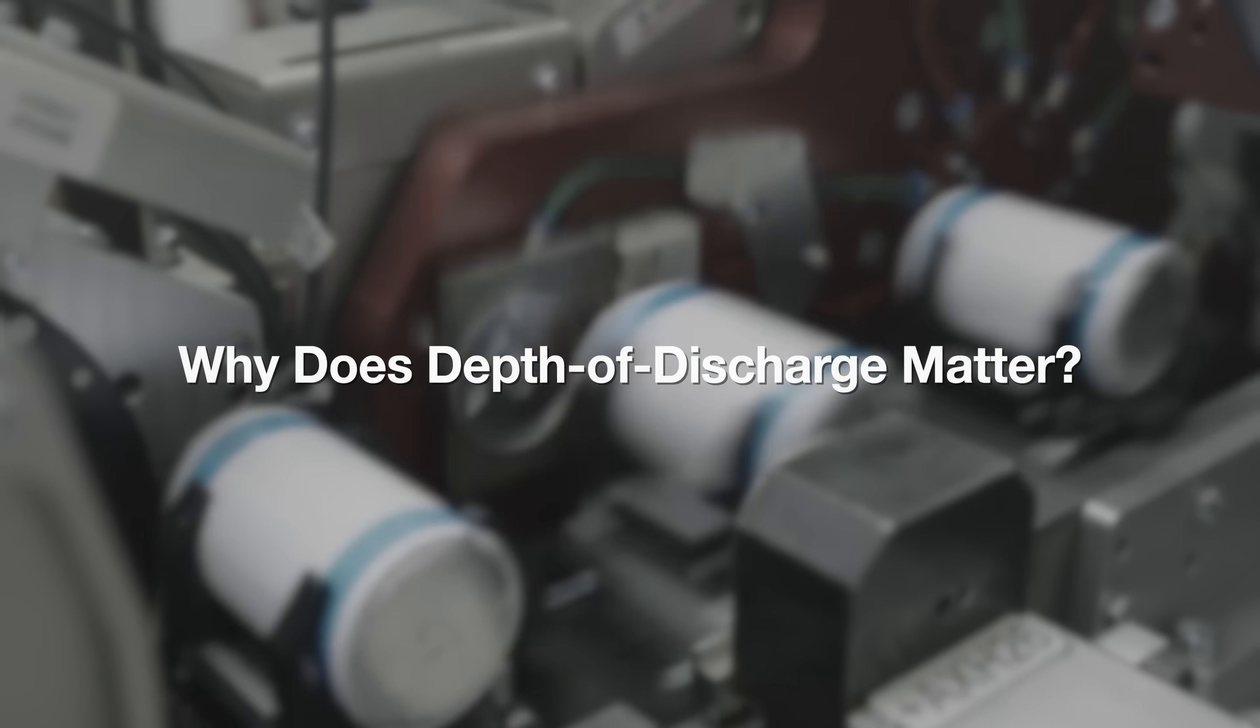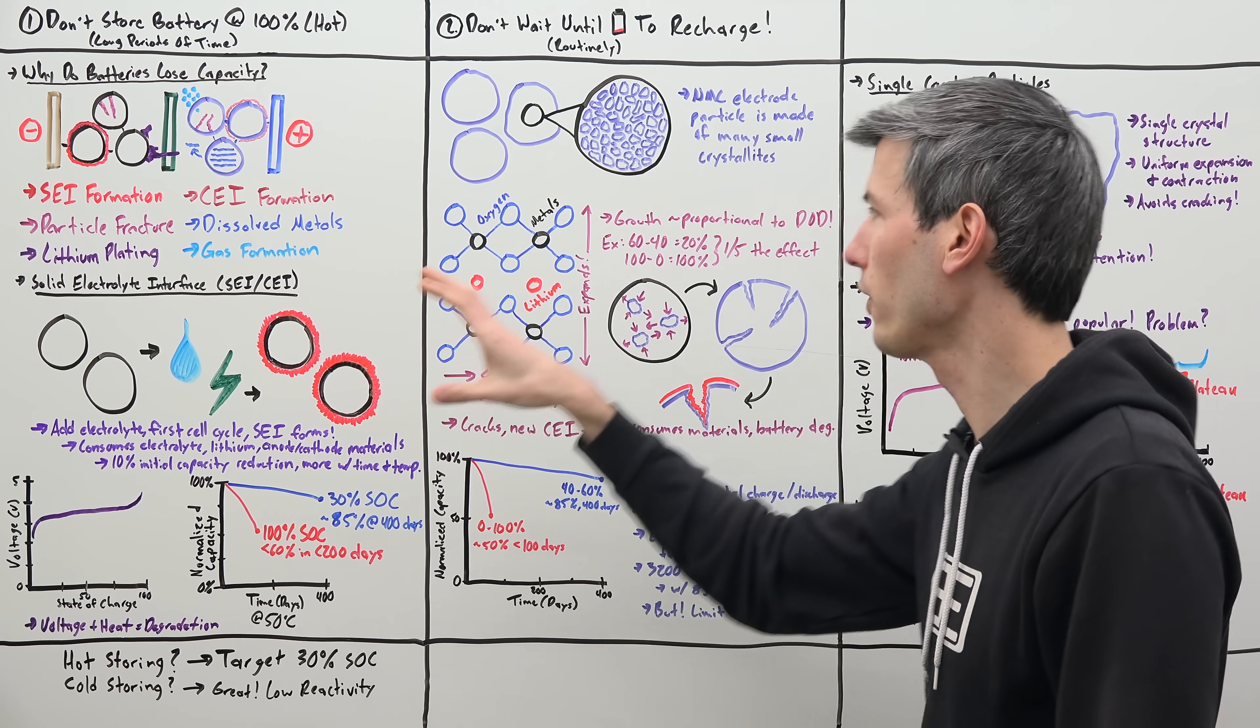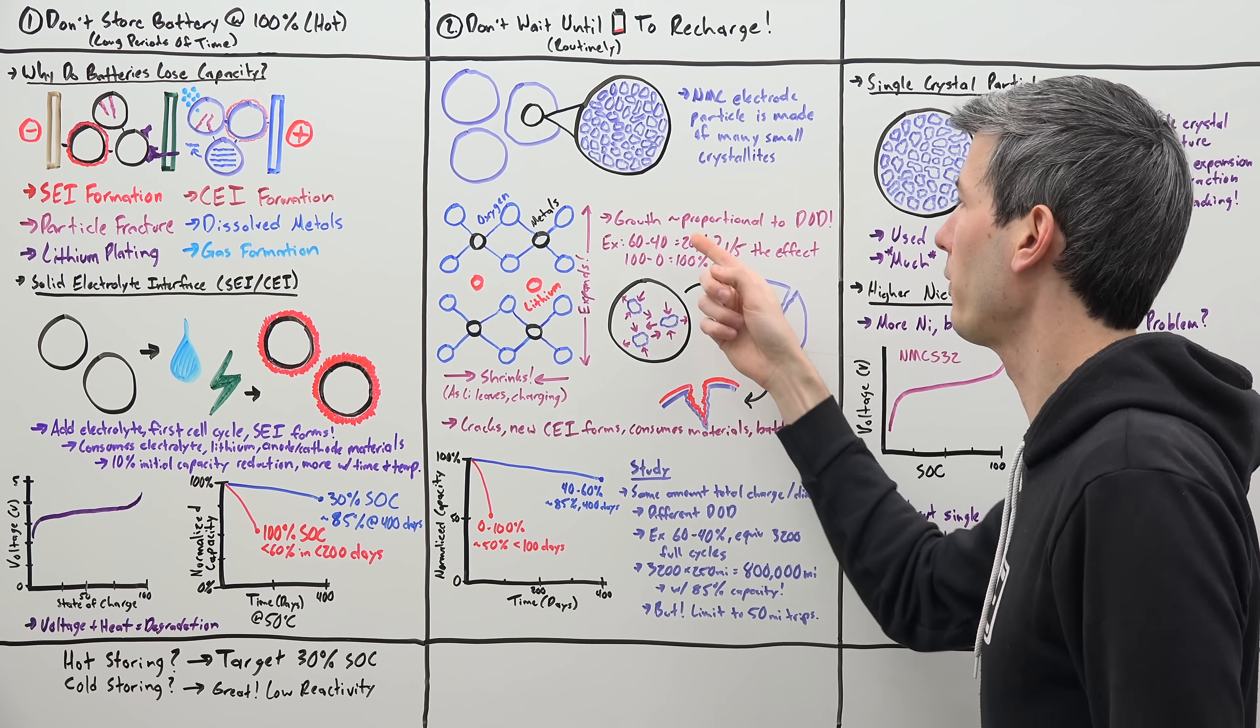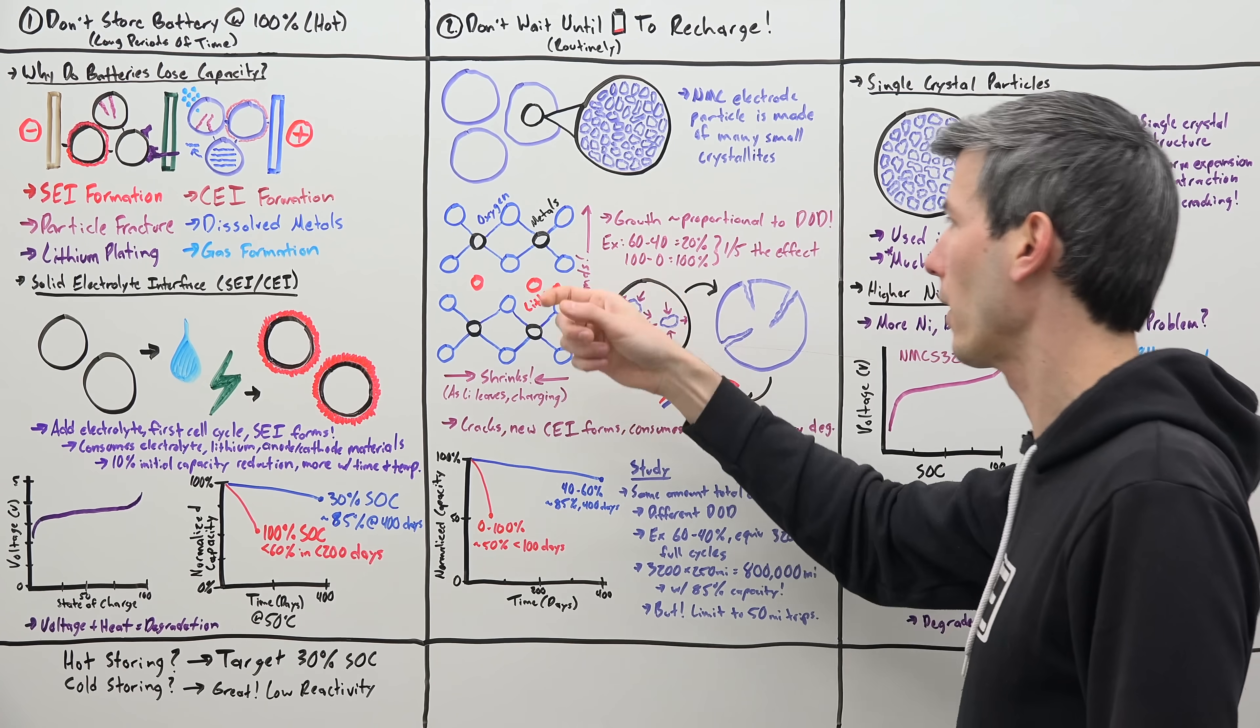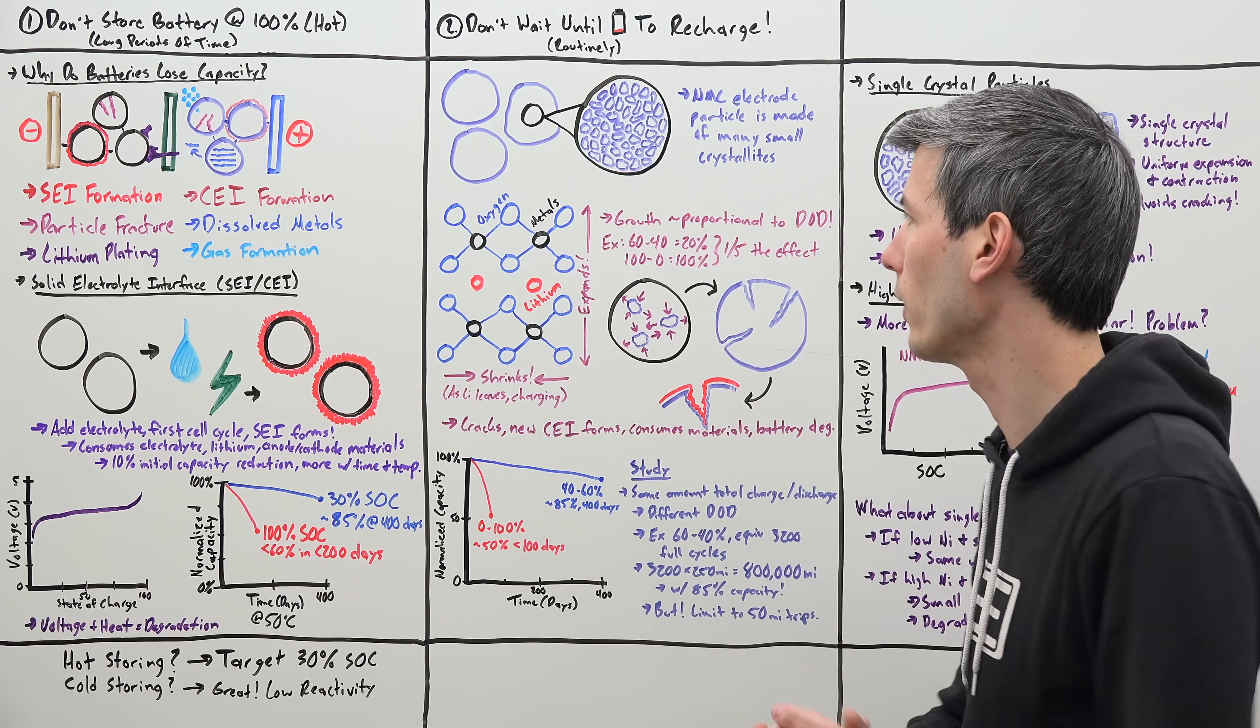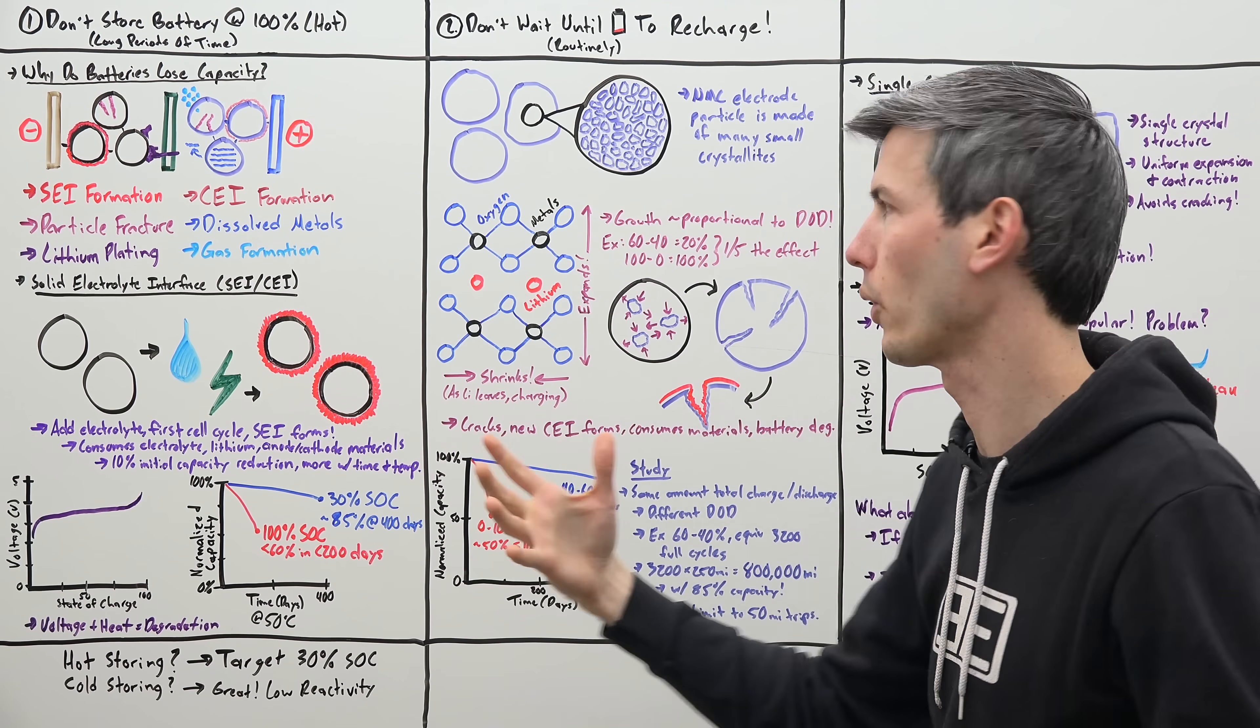Okay, so why does depth of discharge matter then? Well, the growth of these crystals is roughly proportional to the depth of discharge. So for example, if you're just going from 60% battery to 40% battery, that's only 20% of your total battery, versus if you're going from 100% to 0%, 100% of your total battery.